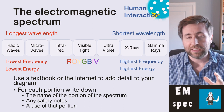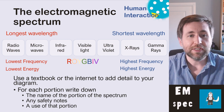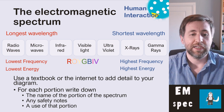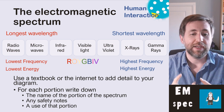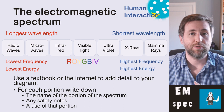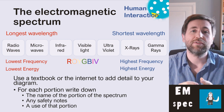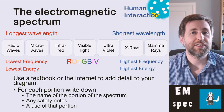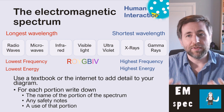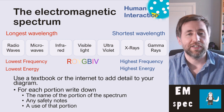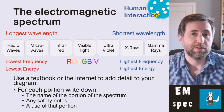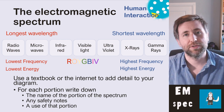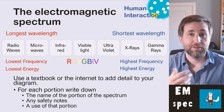Now I suggest that you use your own research to try and find out for all of these different things: the name of the portion of the spectrum, any safety notes, and the use of that portion. You could even go into finding sources of those types of radiation and things which can detect them. That will really help you build up a knowledge of the electromagnetic spectrum to use in the exams.